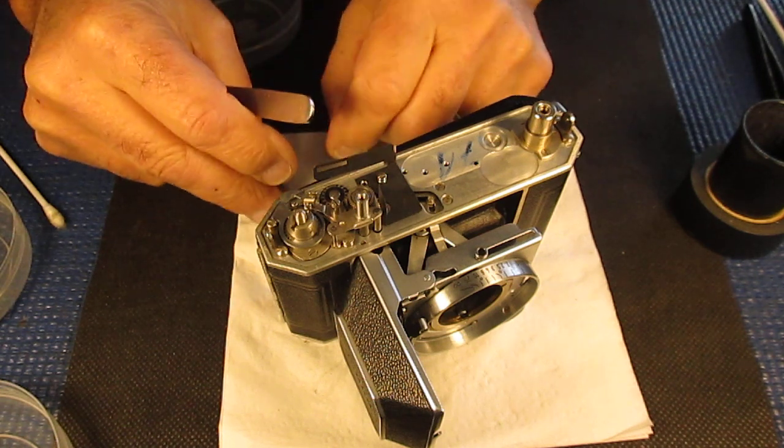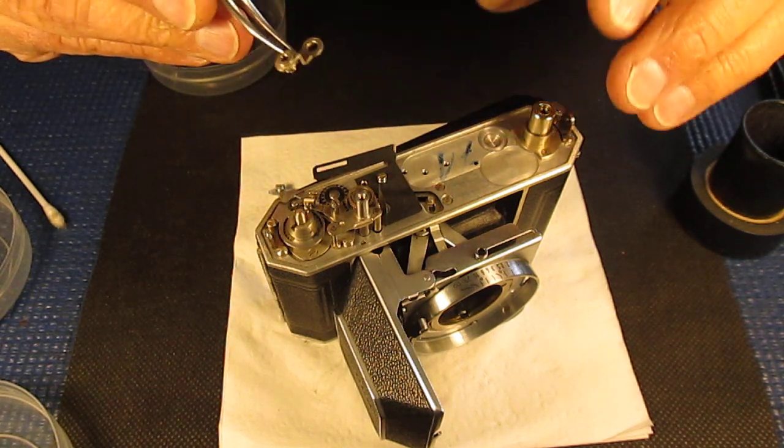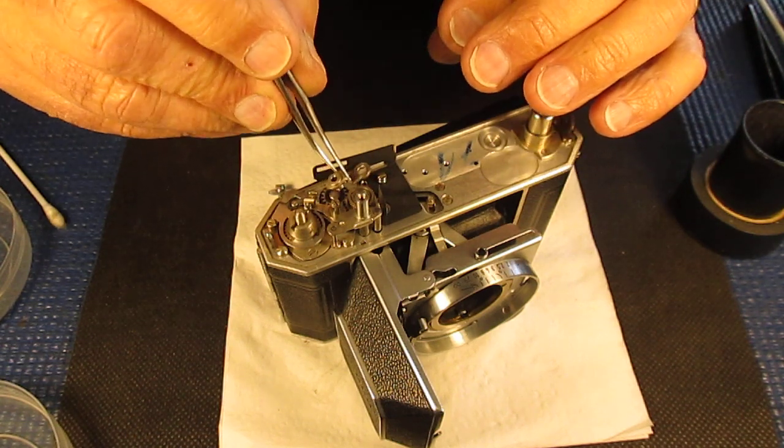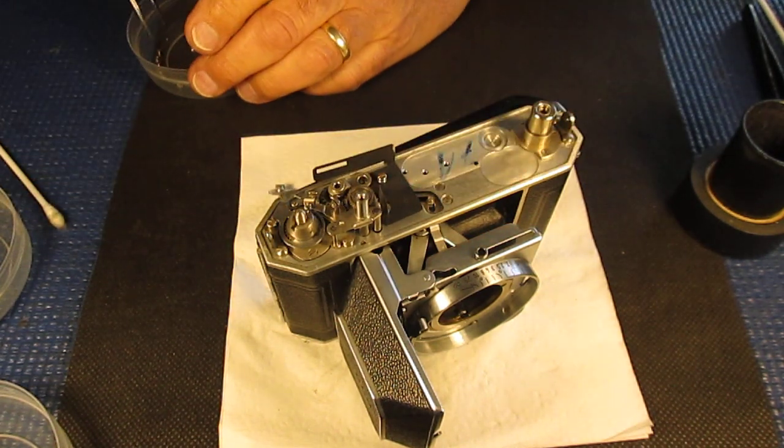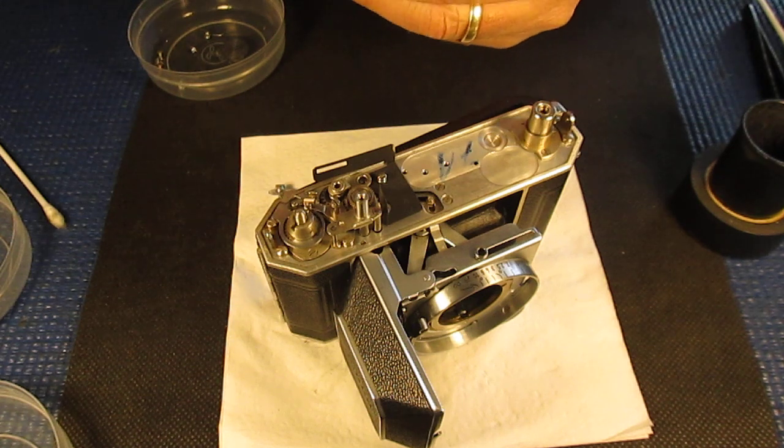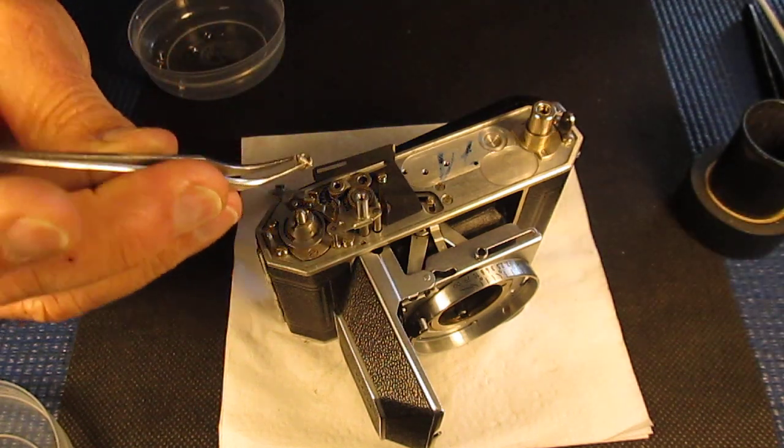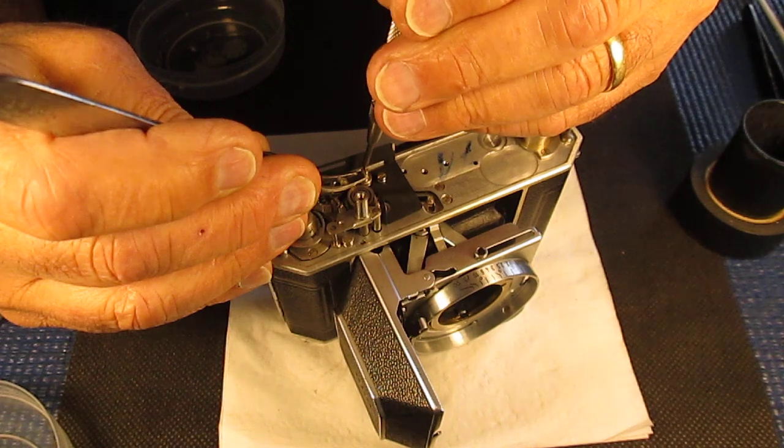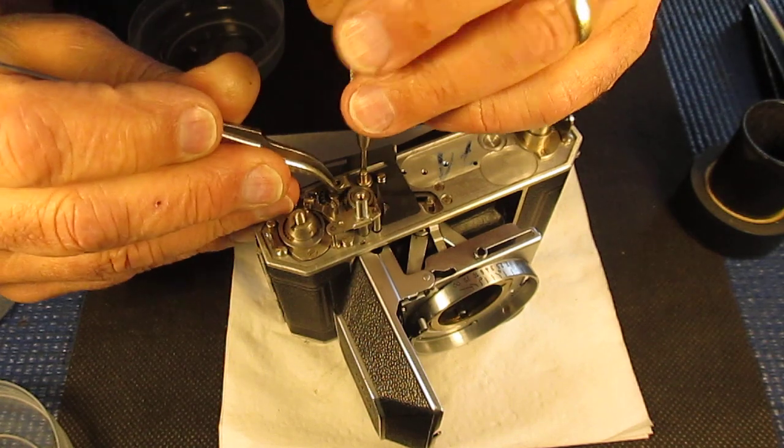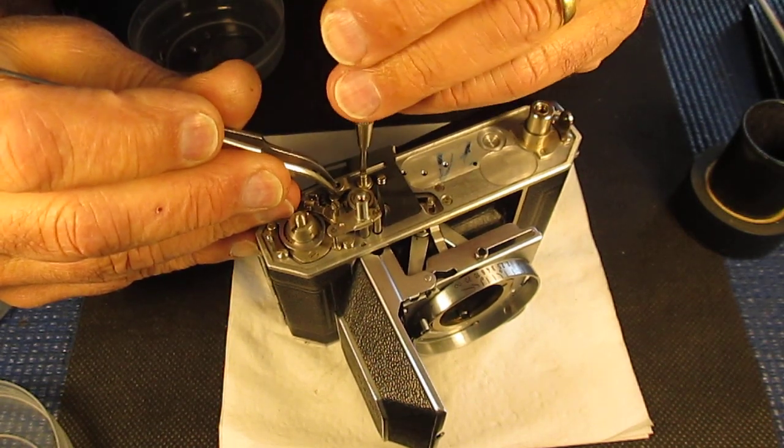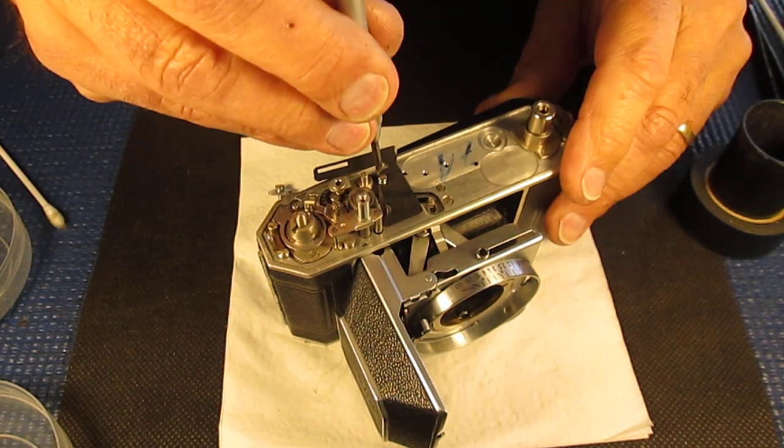We can pop the arm on here. It carries the frame counter adjuster. It's held in place with a shouldered screw. Make sure that's firmly in place with a shouldered screw.